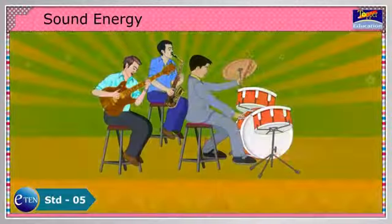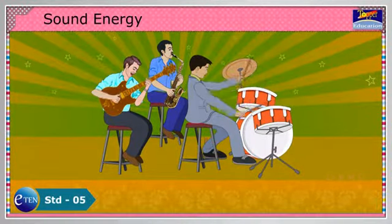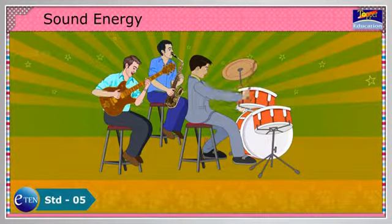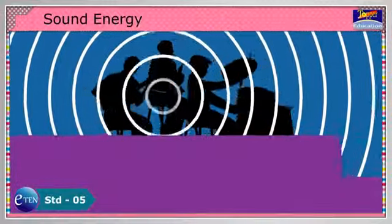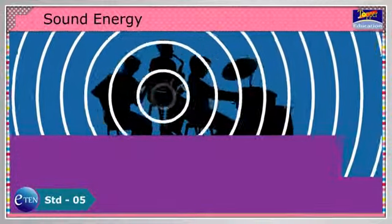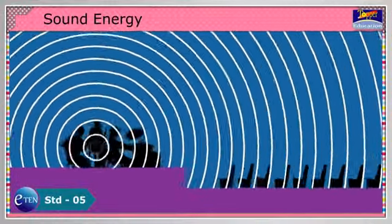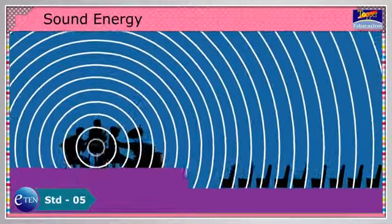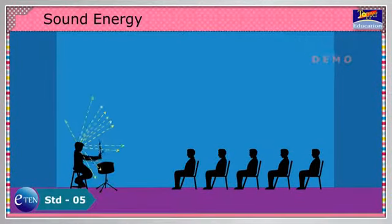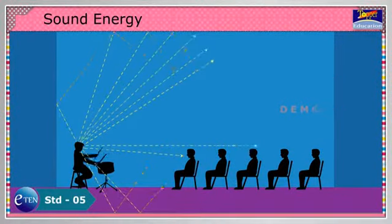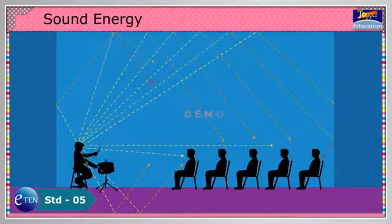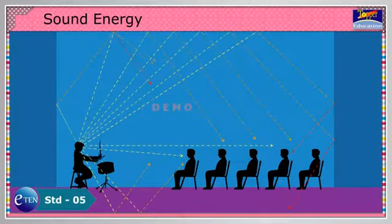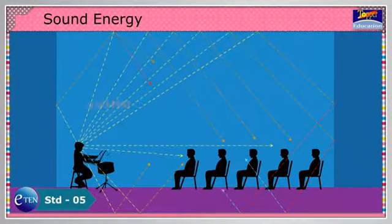Sound energy is a form of energy that is associated with vibrations of matter. The wave caused by vibration is called a sound wave. When force is applied, vibrations are produced. These vibrations create sound waves which can move through air.